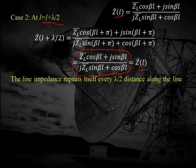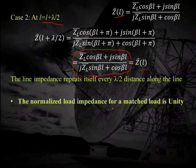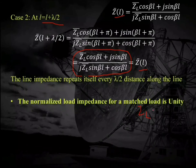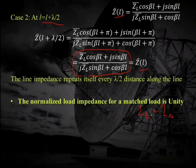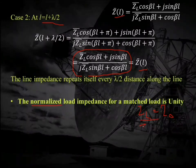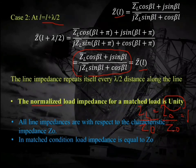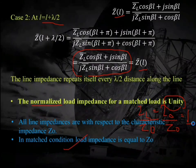In the matched case, ZL must equal Z0, so the normalized load impedance ZL/Z0 equals 1 or unity. All line impedances are referenced to Z0, meaning that in the matched load condition the normalized value equals one.